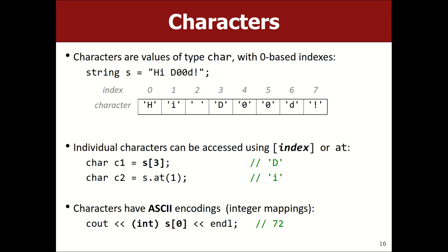There's also a method called 'at', which is like Java's charAt method — you pass an index and it returns the character stored there, but most people just use the square brackets. Characters are stored with a numerical code like ASCII or Unicode — for example, uppercase H is equivalent to the integer 72. You can typecast between those two things, though we won't do a lot of that in this course.